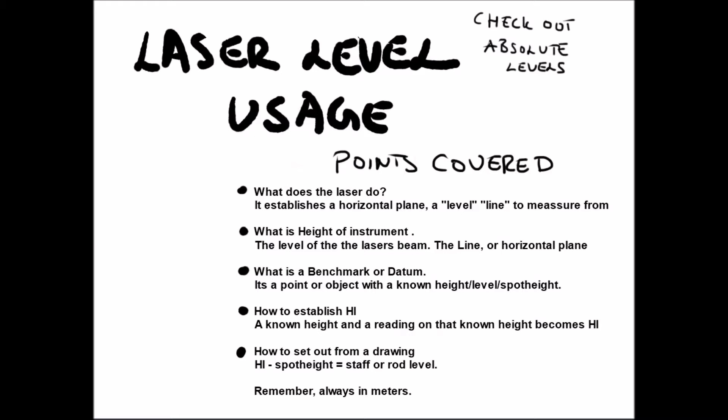So what does the laser actually do? It's good to think that this is also applicable for dumpy or automatic levels or optical levels. A laser is basically just a quicker way and more convenient usually. The most basic thing is that it gives a line that is in the same level all over the place. Technically, you could say it defines a horizontal plane that you can measure heights off from or levels off from.